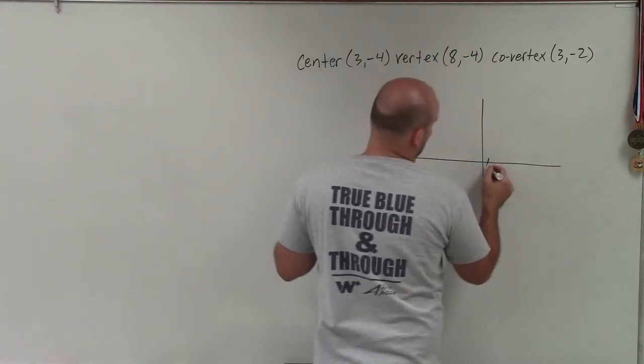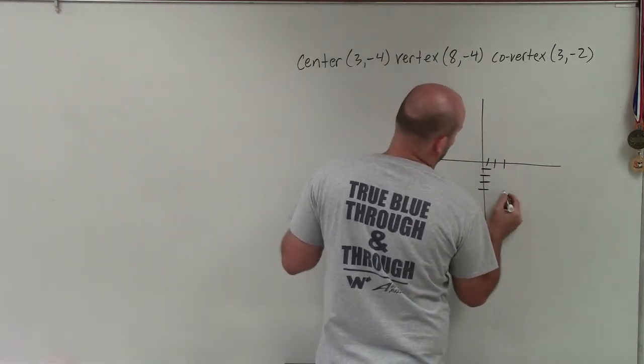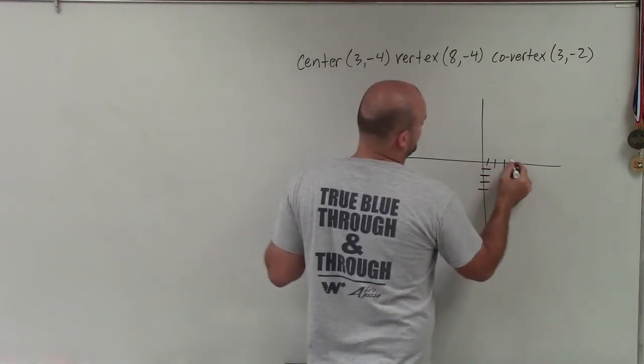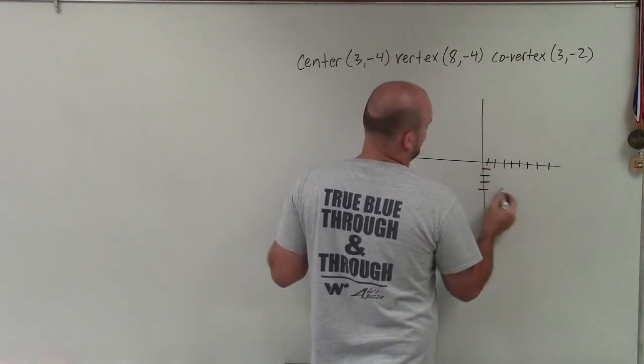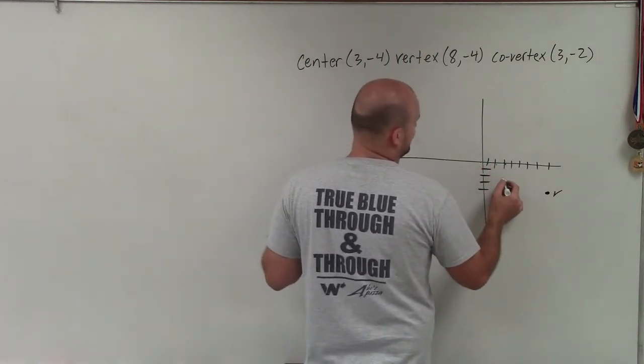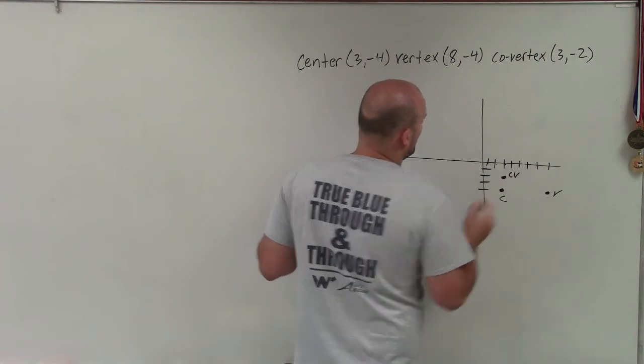Our center is at (3, -4). So 1, 2, 3, and 1, 2, 3, 4. The vertex is at (8, -4). So 1, 2, 3, 4, 5, 6, 7, 8, and negative 4. That's the vertex and center. The co-vertex is at (3, -2), so 1, 2, 3, negative 2.